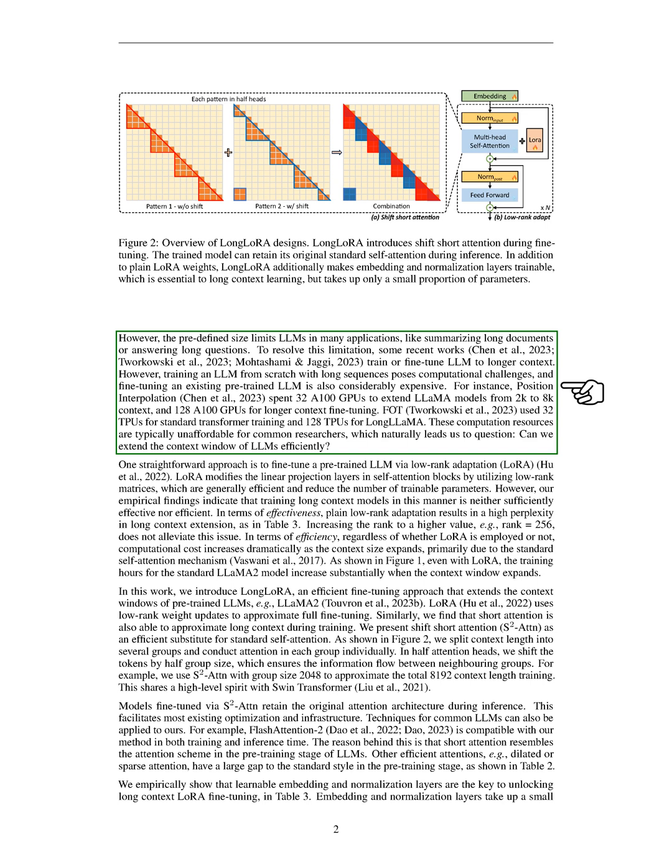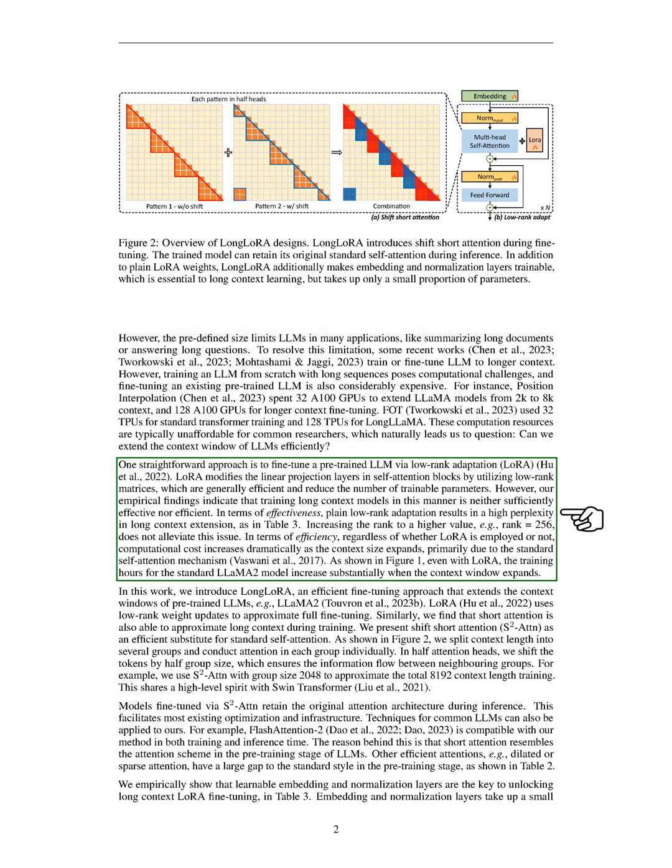One possible solution is to fine-tune a pre-trained LLM using a method called low-rank adaptation, LoRA. This method modifies the linear projection layers in self-attention blocks using low-rank matrices, which are generally efficient and reduce the number of trainable parameters.